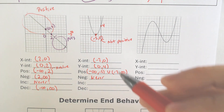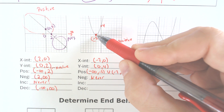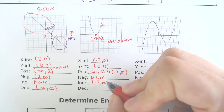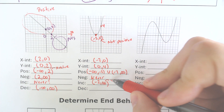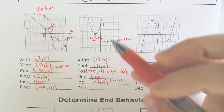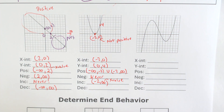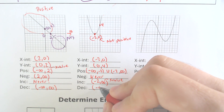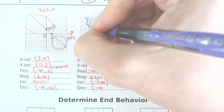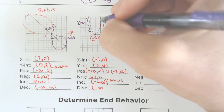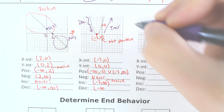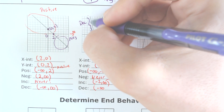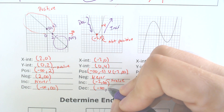The graph is increasing from negative 2 up to infinity — remember, we're focusing on x values, not y values. We are going to the right for increasing and decreasing. It is decreasing when we are going down the mountain, which happens from the left side of the graph down to negative 2. So it is decreasing from negative infinity to negative 2.